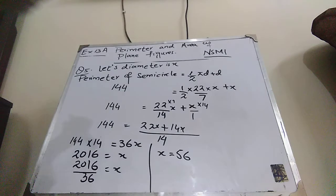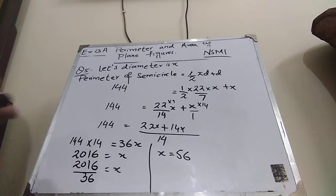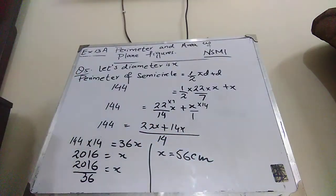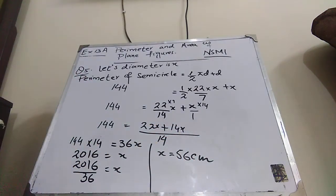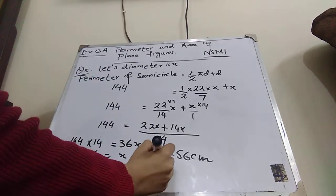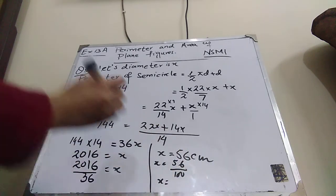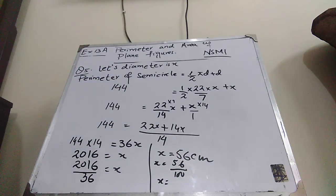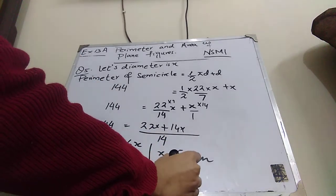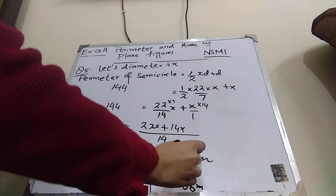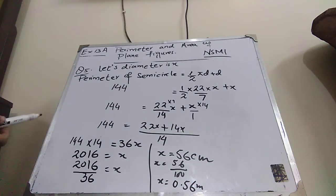So, our first answer is basically in centimeters. But we have to find out the answer in meters. To convert centimeters into meters we have to divide by 100. So 56 divided by 100 will be equal to 0.56 meters. Remember that one meter is equal to 100 centimeters. That is why we divided by 100 to convert into meters. I hope that question number 5 is clear to you.